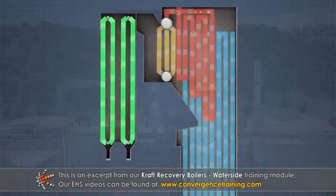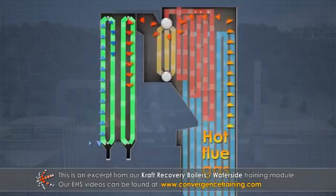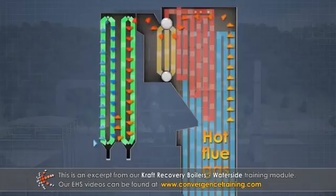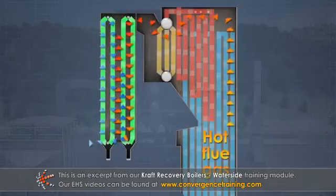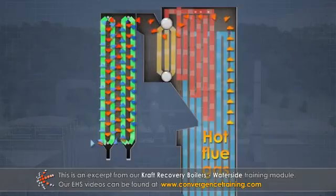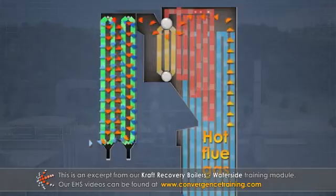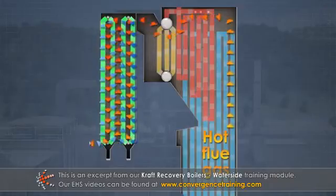Sometimes there are multiple banks of economizer tubes. In this case, the flows are routed in a counter-current fashion such that the coolest incoming water contacts the coolest outgoing gas.